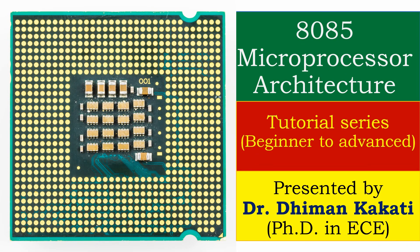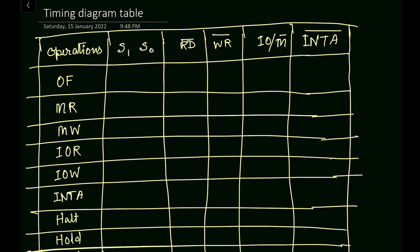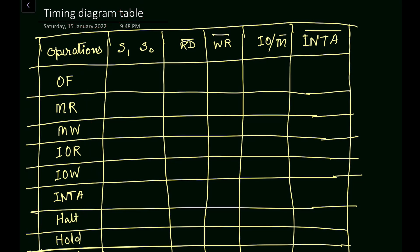Hello everyone, this is Dr. Dhiman and I welcome you all to this microprocessor tutorial series. In this video we will learn about a table that will show the various signals for timing diagram purposes. This timing diagram table will help you to draw the timing diagram. First of all, let us see the various operations along the Y-axis, and for these operations we will find out which signal will be high or low.